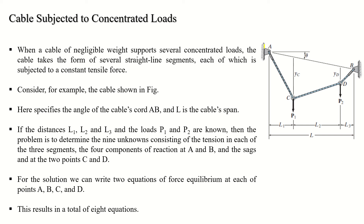Here is your cable with support A and support B, both pin or hinge supports, giving four external reactions — horizontal and vertical at each support. Two point loads P1 and P2 are applied at points C and D. The deformed shape of the cable is ACDB. The shortest distance from A to B is line AB, and its angle with the horizontal is theta.